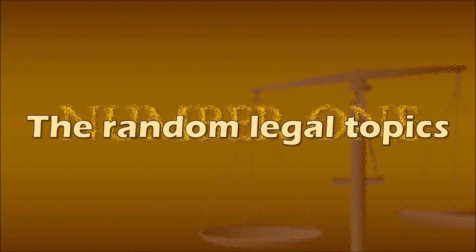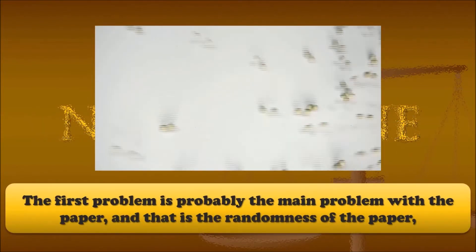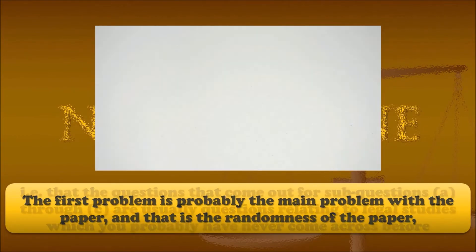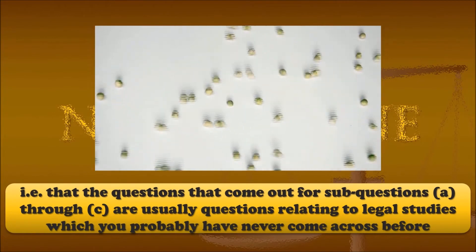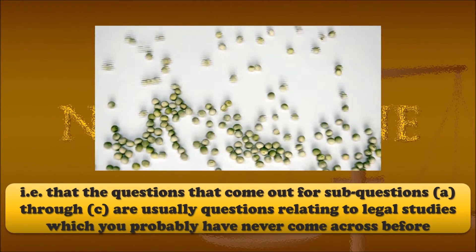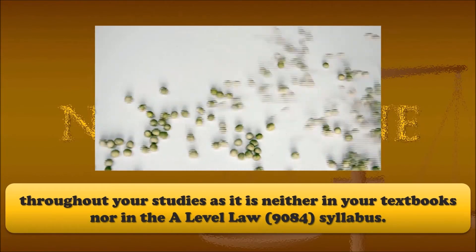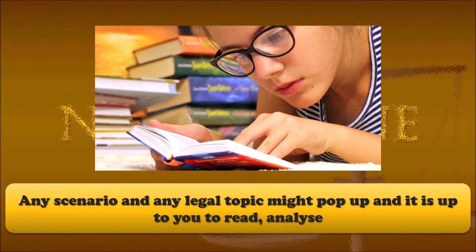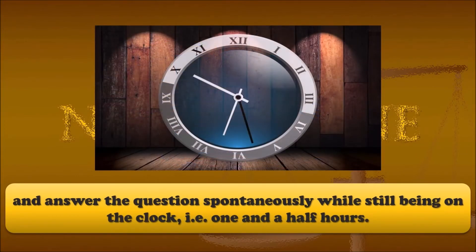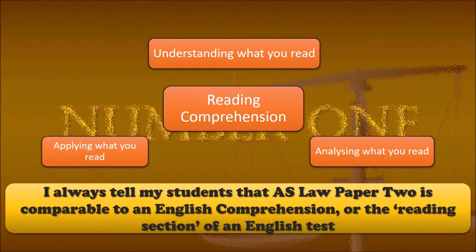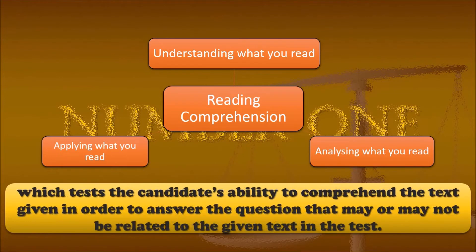Number 1: The Random Legal Topics. The first and probably main problem with the paper is the randomness. The questions for sub-questions A through C are usually about legal topics which you have never come across before — neither in your textbook nor in the A-Level Law syllabus. Any scenario and any legal topic might pop up, and it is up to you to read, analyze, and answer the question spontaneously while still being on the clock. AS Law Paper 2 is comparable to an English comprehension test, which tests the candidate's ability to comprehend a given text in order to answer the question.